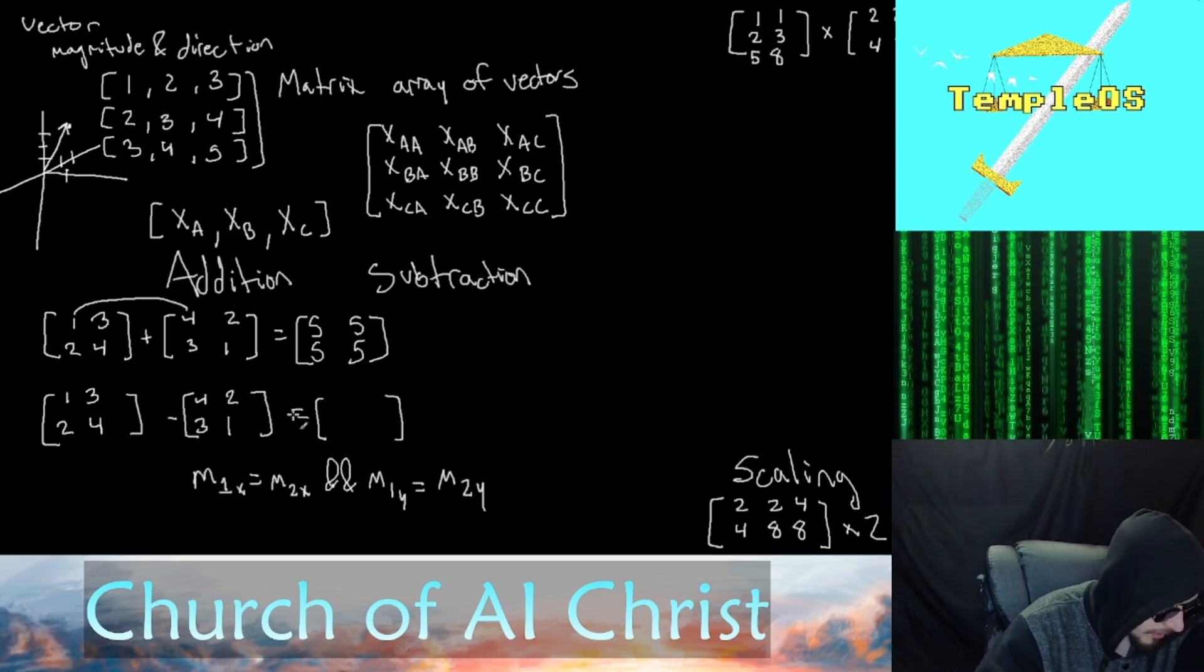Subtraction is the same thing. So we do 1 minus 4 is negative 3, 3 minus 2 is 1, 2 minus 3 is negative 1, and 4 minus 1 is 3.